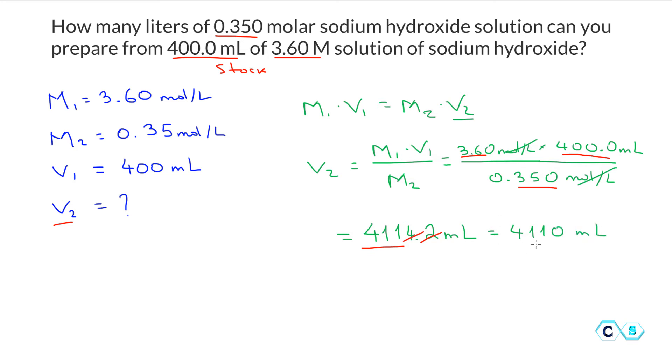Now in the last step we need to convert this to liters. So the volume in liters will be equal to 4110 milliliters multiplied by this conversion factor. Every 1000 milliliters correspond to one liter. So cancel the milliliters and we have 4.11 liters of the final solution.